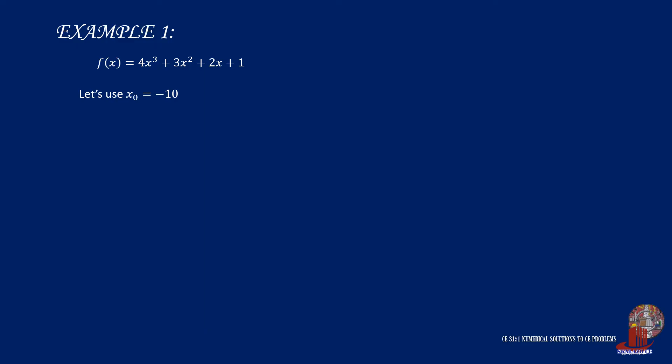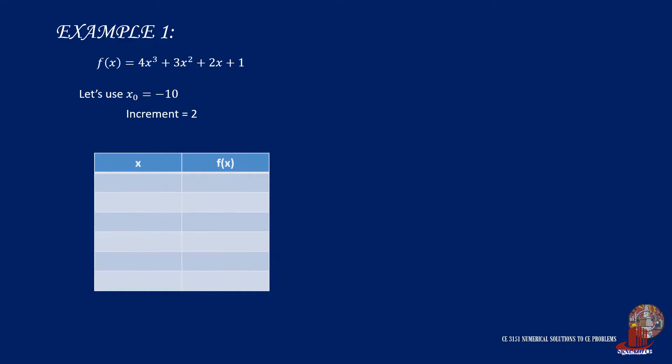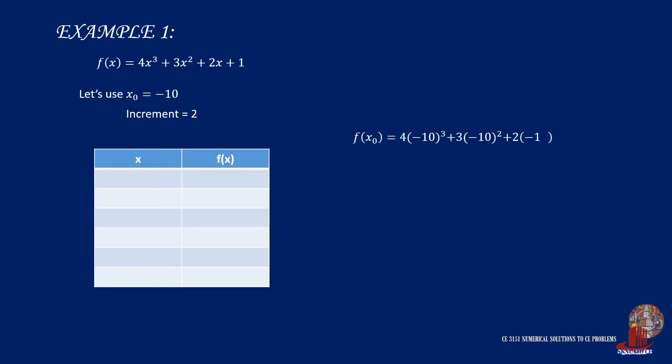In this case, we're going to have -10 and an increment of 2. By plugging in -10 into the formula, we arrive at f(x) as -4319. Then taking an interval of 2, we compute for f(x) using x = -8 and get f(x) as -2255. So we can say that increasing the value of x leads us to the change in sign of f(x).